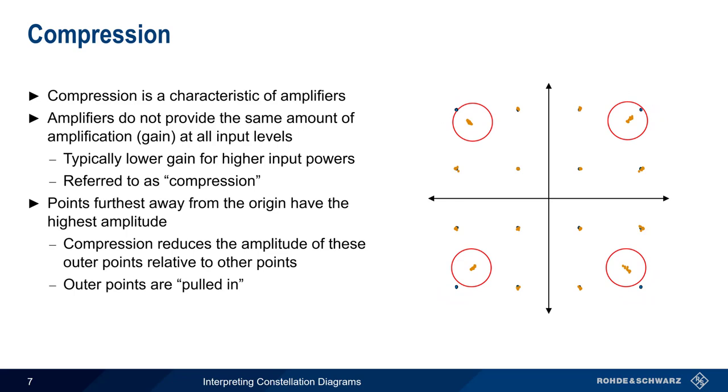Since amplifiers are used in both transmitters as well as receivers, distortion may be caused by compression on one or both ends.